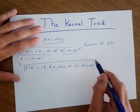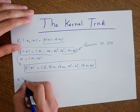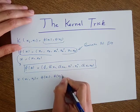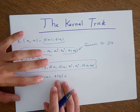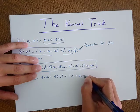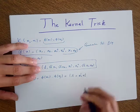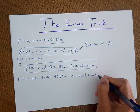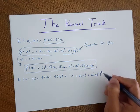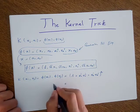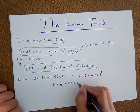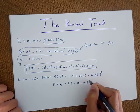Now I define a kernel function equal to phi(xi) dotted with phi(xj). If I perform this dot product and work out all the math, I get: 1 plus x1_i times x1_j, plus x2_i times x2_j, all raised to the power of 2. This means the kernel function associated with this transformation equals (1 + xi · xj)².